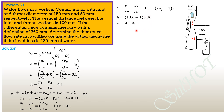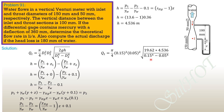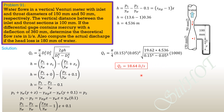Substituting into the theoretical discharge formula: Q_theoretical = (π/4) × (0.15² × 0.05²) × √(19.62 × 4.536) / √(0.15⁴ − 0.05⁴), multiplied by 1000 to convert to liters per second. Q_theoretical = 18.64 L/s.